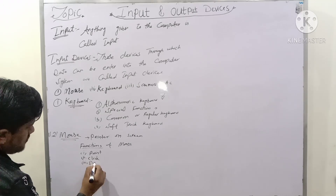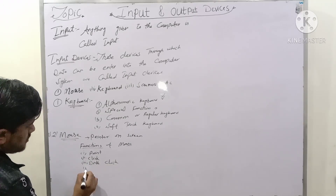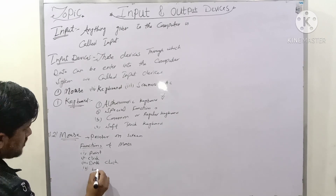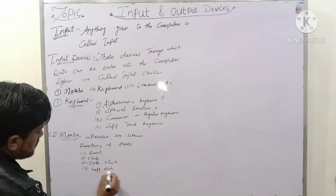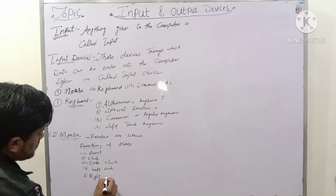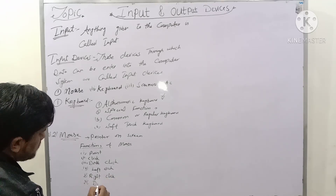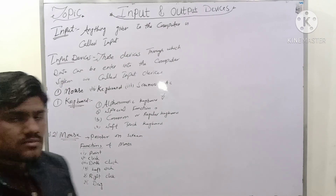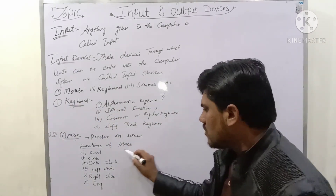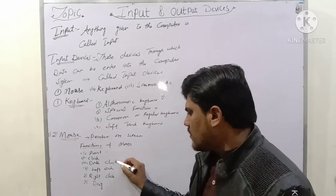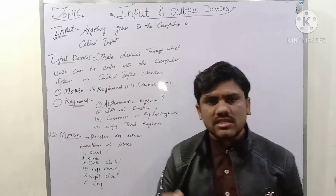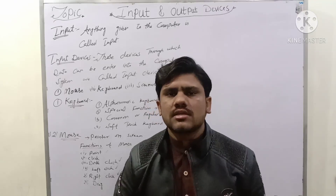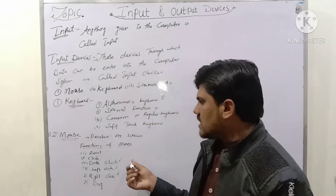Mouse has some important functions. It is used to point and click on screen. Functions of mouse include: single click, double click, left click, right click, and drag. The mouse has two buttons — left click and right click — and a scroll wheel through which you can scroll the page up and down.